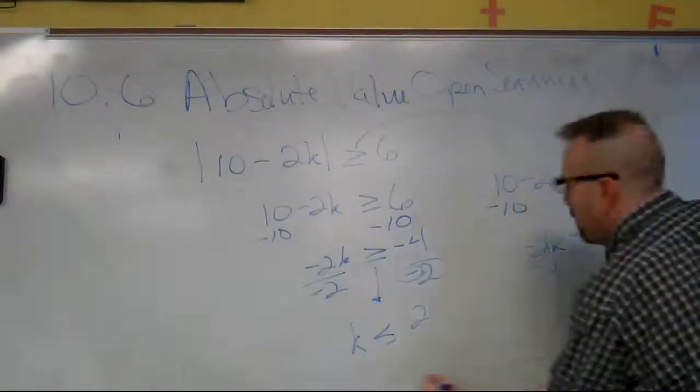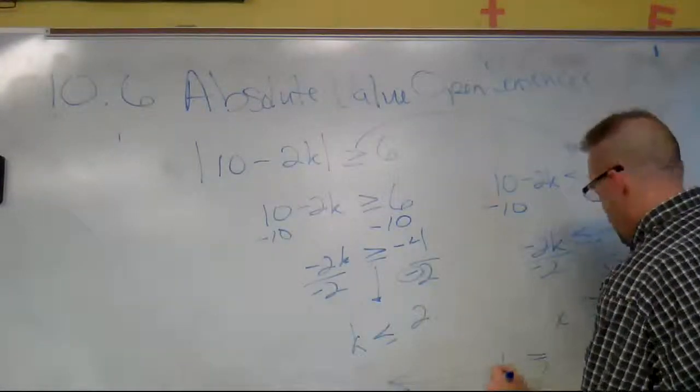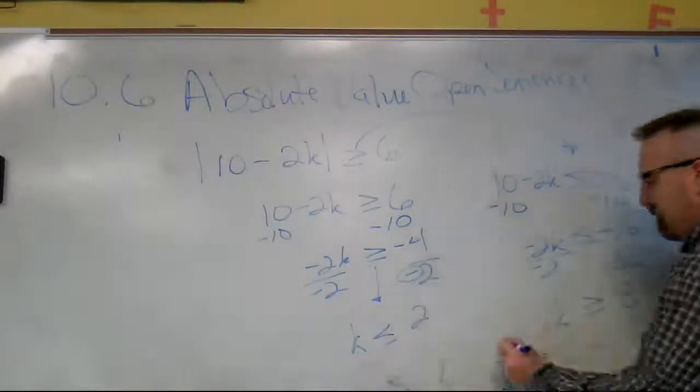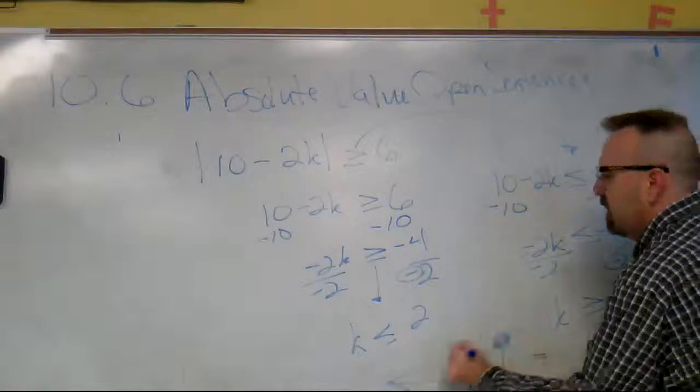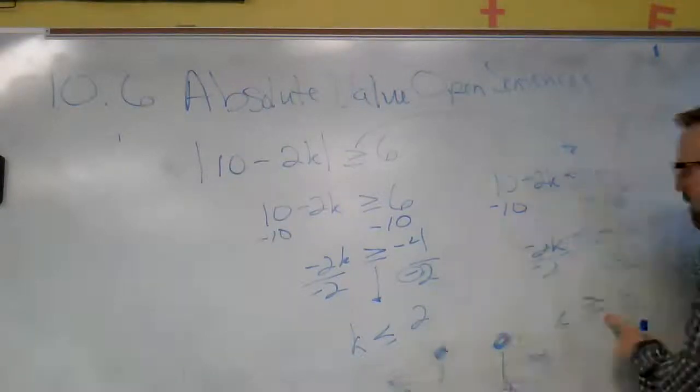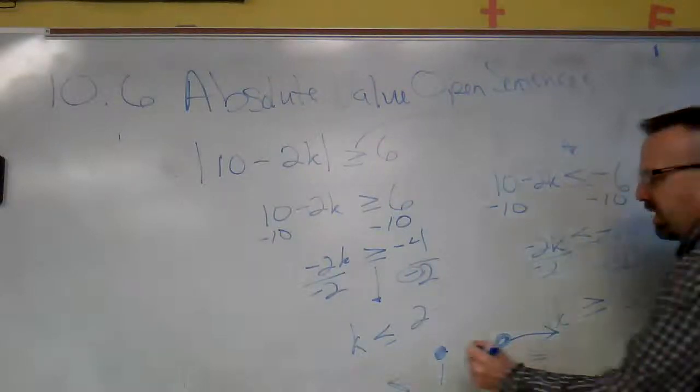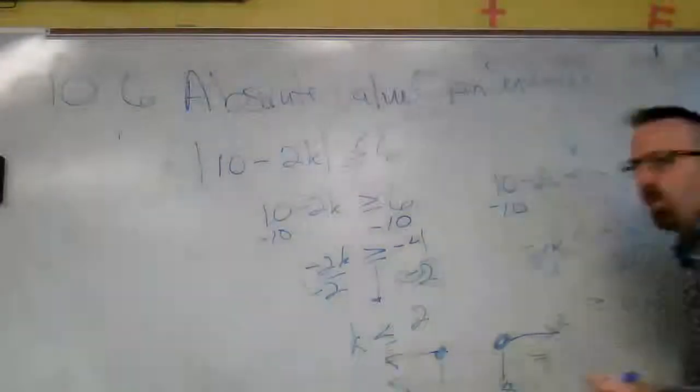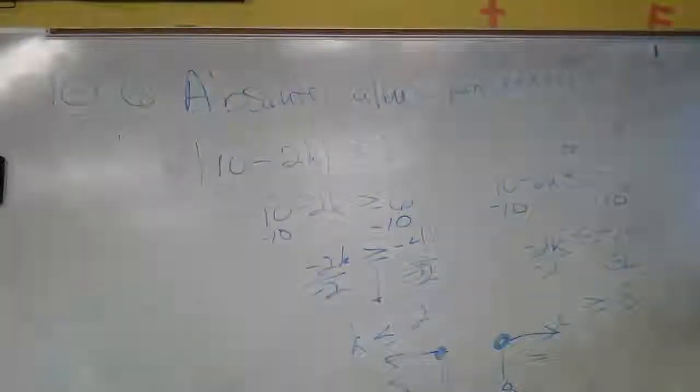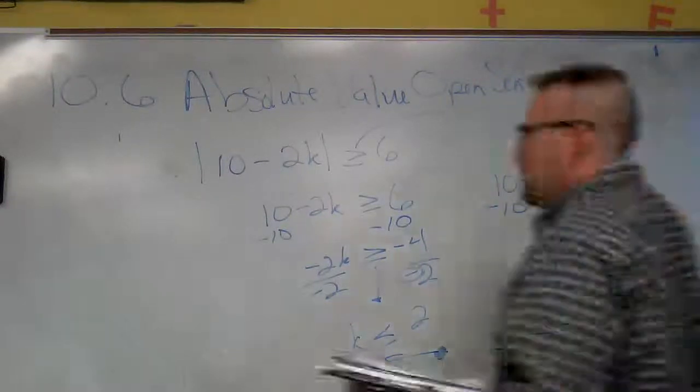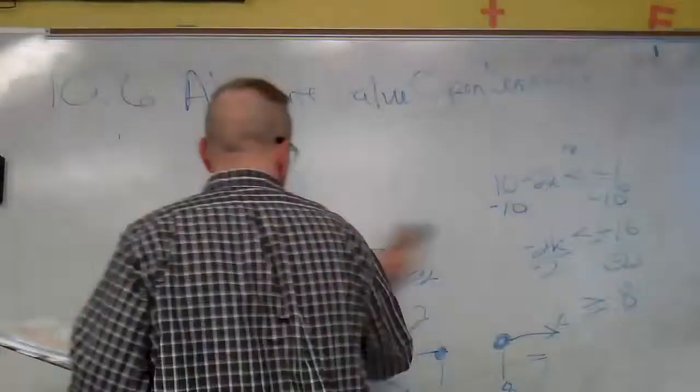Now for the graphing. We have 8, we have 2. They both have the line, so they both have a dot. k is greater than 8, k is less than 2. So this one is an 'or' because of the fact that they're going in both directions. Let's do one more just to get you totally on the right page.